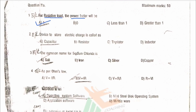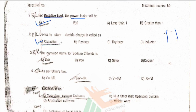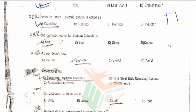Next question: device to store electric charge. The device that stores electric charge is called a capacitor — it works through the accumulation of charge between two plates. So the device to store electric charge is called a capacitor, which is the correct answer.